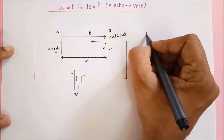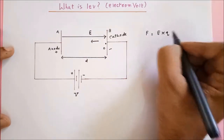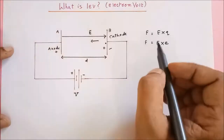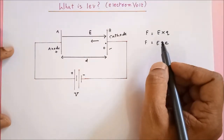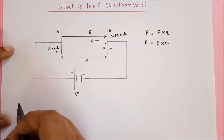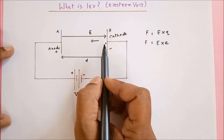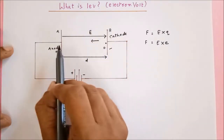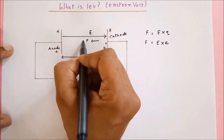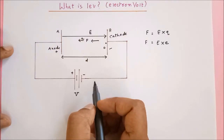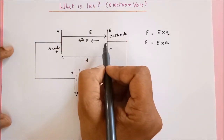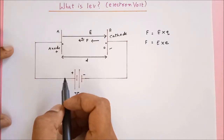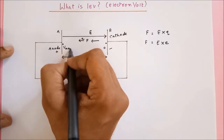What's going to happen now is this electron is going to experience a force in this direction. That force F is equal to the electric field multiplied by the charge, and we know that the charge of an electron is e. So this is the force which the electron is experiencing. Under the effect of this force, the electron is going to get accelerated in this direction, so the speed of the electron is going to increase. F is the force and A would be the acceleration in the same direction. The electron starts at rest, so its speed increases until it reaches maximum speed somewhere near the anode — let us call that speed V max.